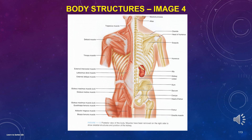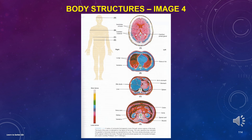This is a posterior view of the body. Muscles have been removed on the right side to show skeletal structures and the position of the kidney. Pause the video and run through the names of the structures. This image also shows a series of computed tomography (CT) scans through various regions of the body. The level of the scan is indicated on the figure of the body, and the color spectrum bar indicates the gradient of structure density represented by color. More dense structures such as bone appear white; the least dense structures appear red.